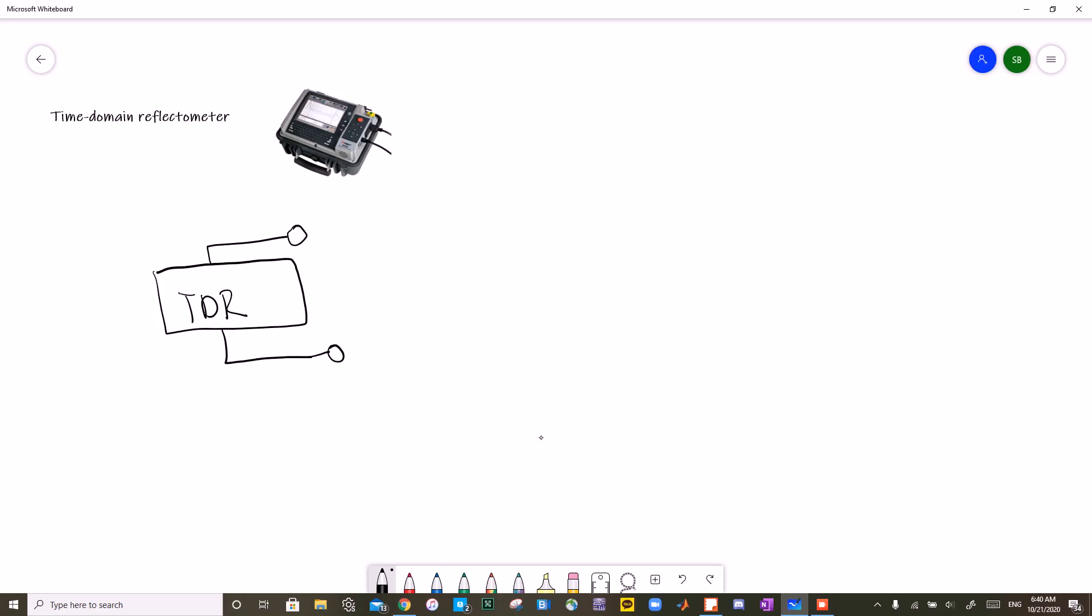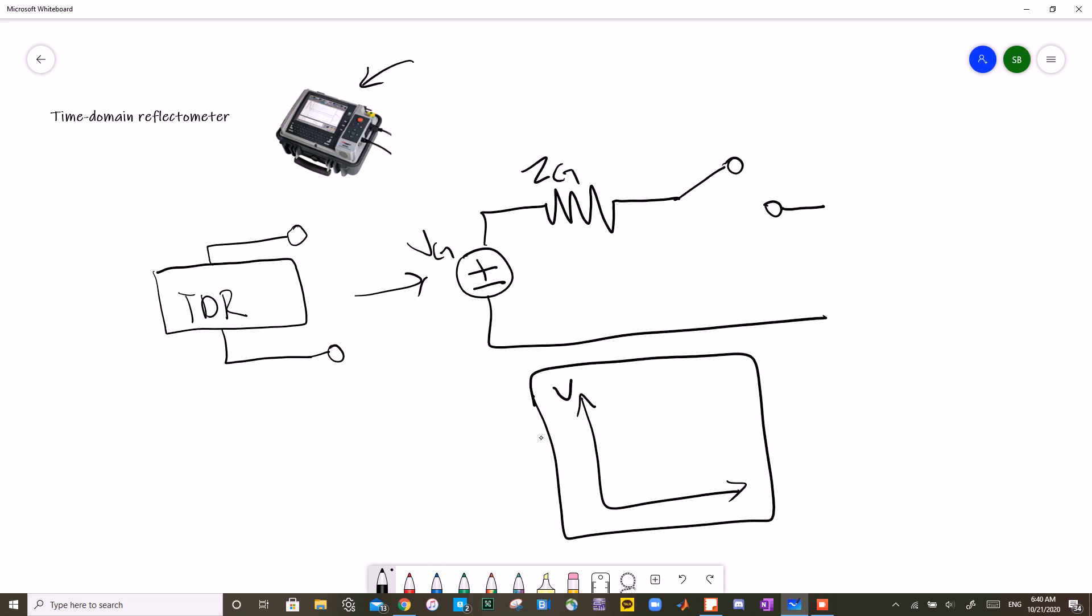A simple TDR looks like this. It contains a DC voltage pulse generator, we'll call that VG, some input impedance, we'll call that ZG, and a switch. It also contains a display, like the one shown here, which shows a plot of the voltage at the end of the TDR versus the time.